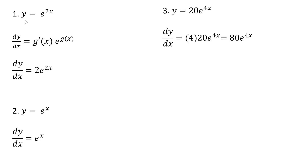Example 3: the derivative of 4x is 4, and that's multiplied by the original function. We can simplify this a little bit — 4 times 20 is 80, and we're left with this result.